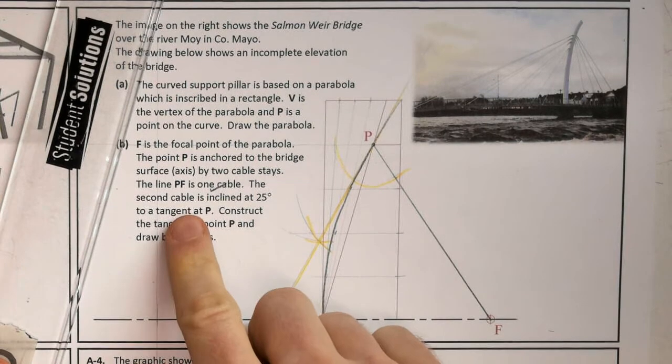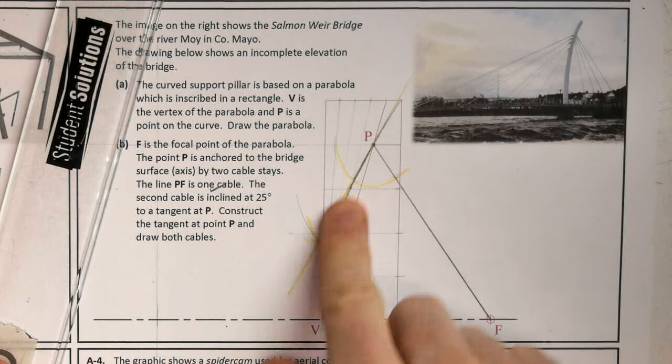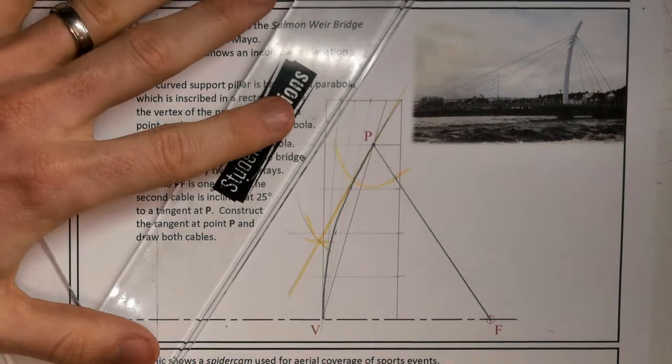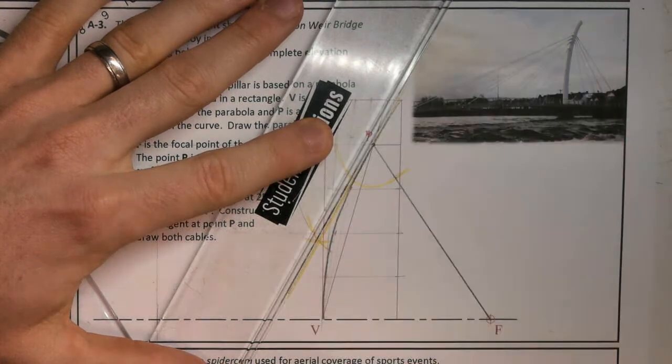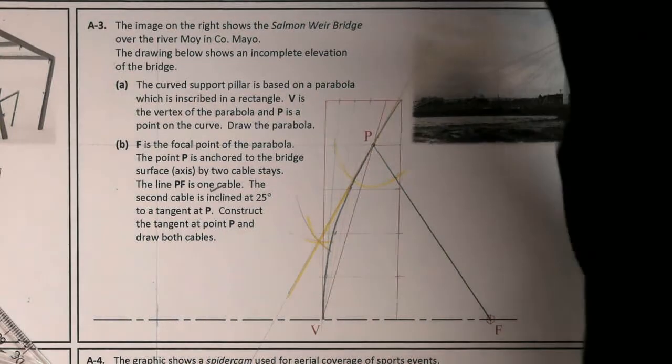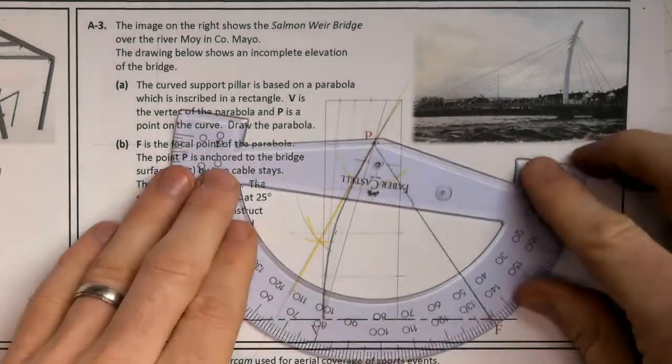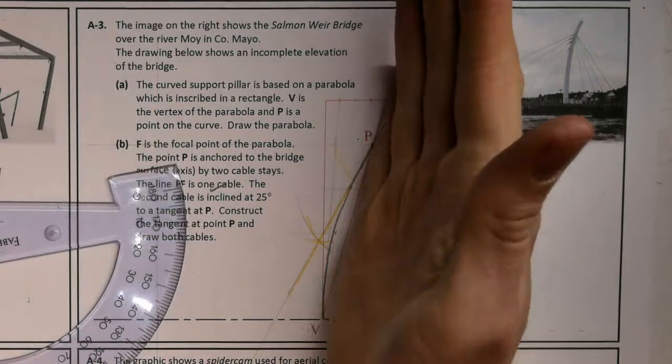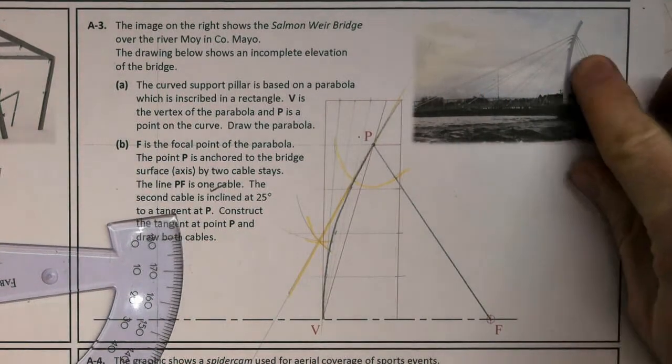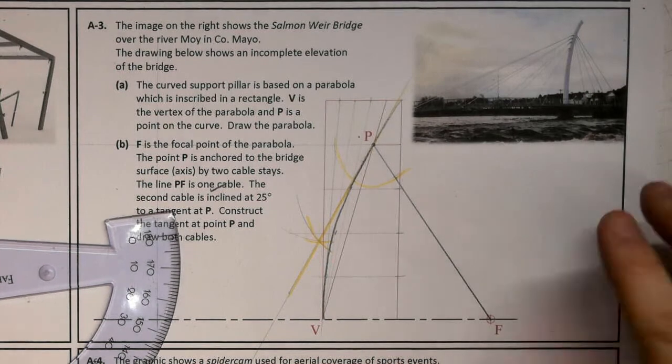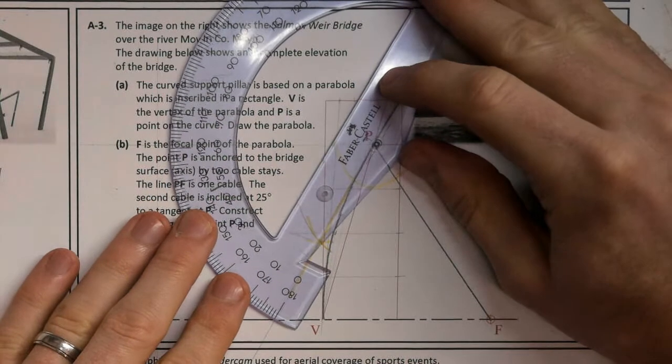They are telling us that the second cable is inclined at 25 degrees to this tangent. So actually I'll just extend this on slightly because I know I'm going to need to with my particular protractor. 25 degrees. I'm not going to measure 25 degrees in this direction because that will bring me inside the parabola. I'm just using kind of common sense. That's not what's done in the actual real bridge. So I'm going to measure 25 degrees out this way.